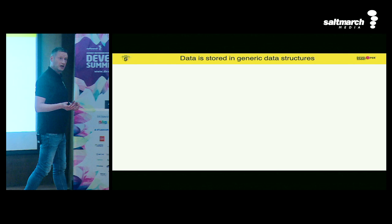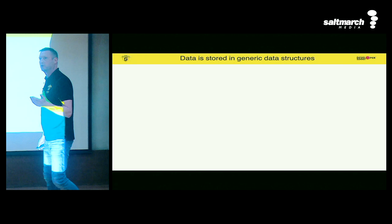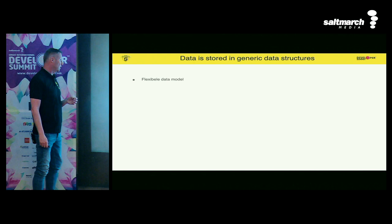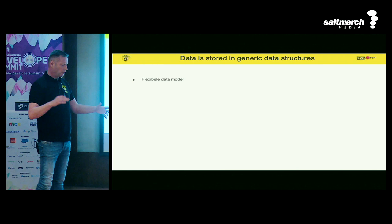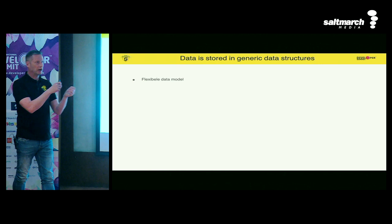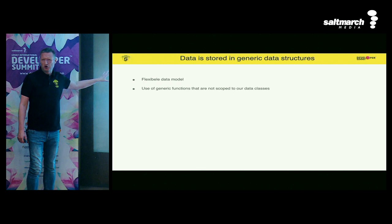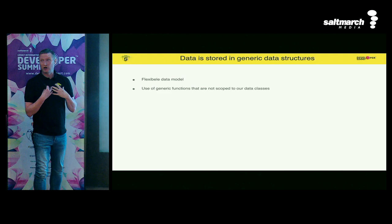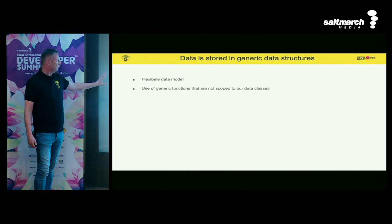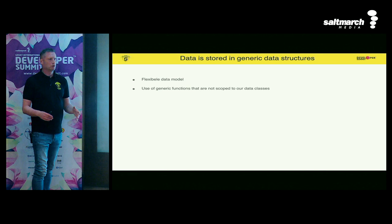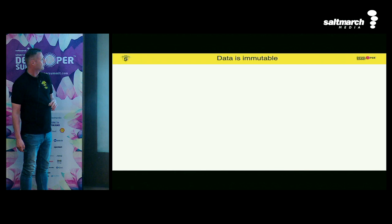The next principle is to store data in generic data structures — lists, maps, queues, sets in Java. They allow for a flexible data model: if I decide I want a property like 'isAdmin,' I can simply add that key to the map with a value. There's also the argument of generic functions, but I think in a Java environment we're lucky to have one of the richest environments. Java has great support for that anyway.